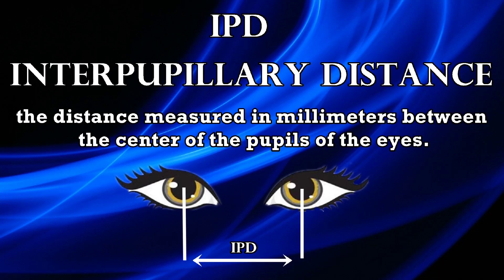Lens spaces should line up with your IPD. IPD stands for interpupillary distance. It's basically the distance between the center of your pupils.